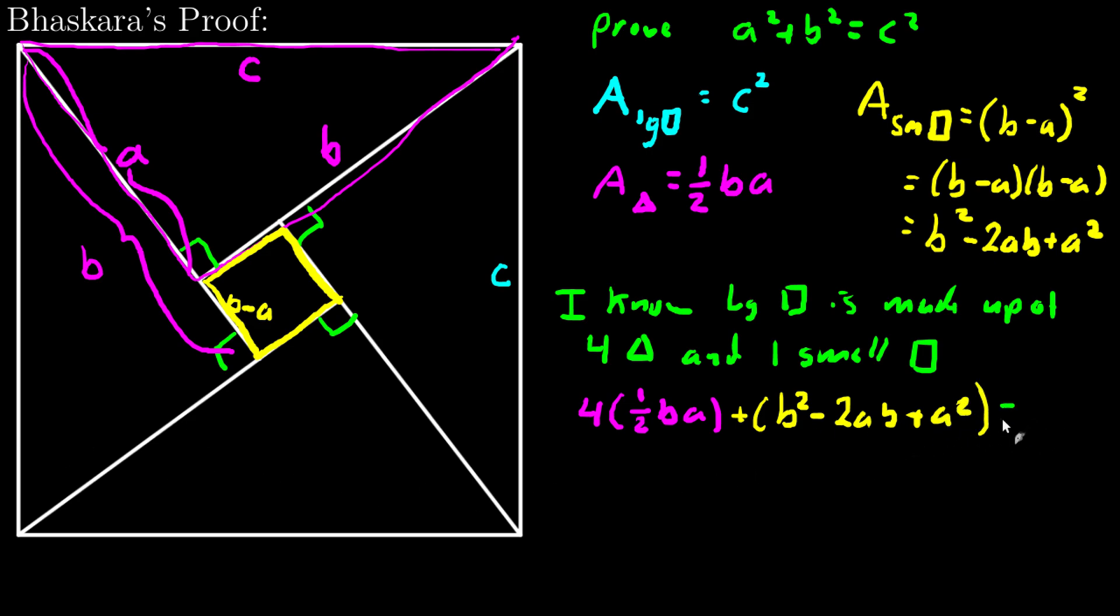must equal the large square's area. Because if I have an area made up of five smaller areas, I add them up and I get the whole area. And the large square's area is c squared.